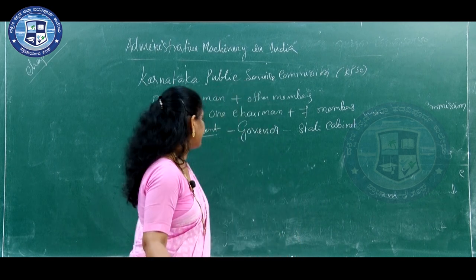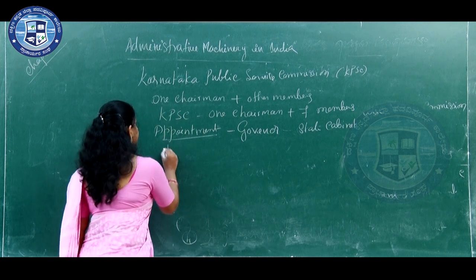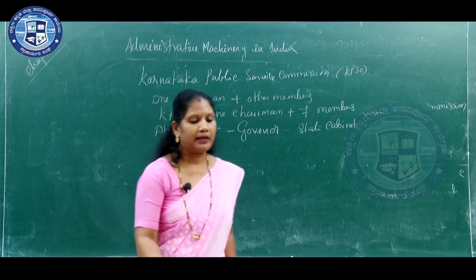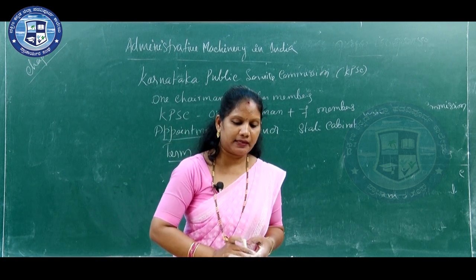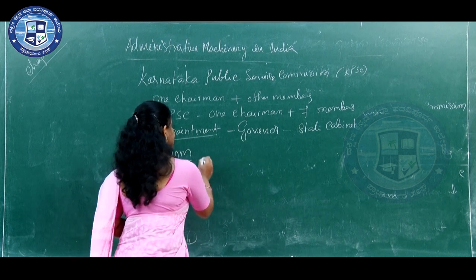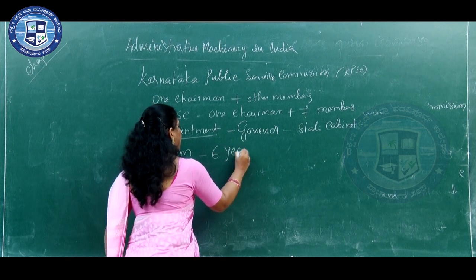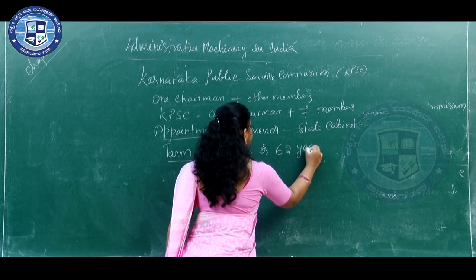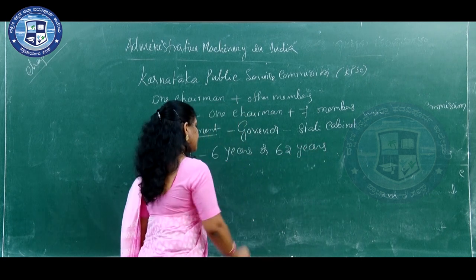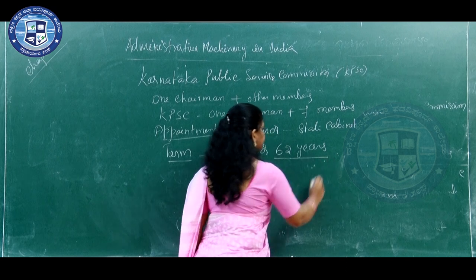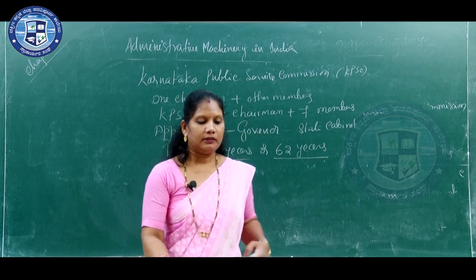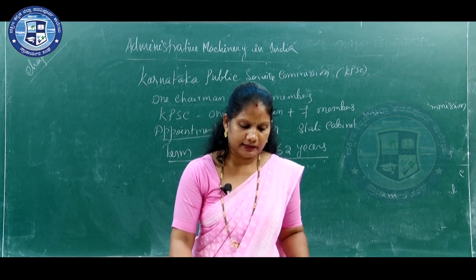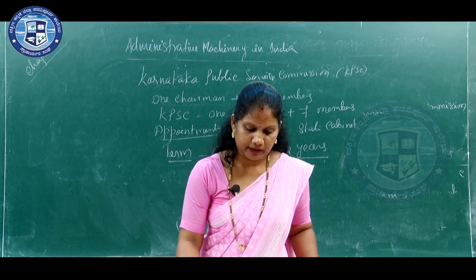The term of the chairman and members of KPSC: they are appointed for a period of 6 years or 62 years, that is the retirement age, whichever comes earlier. They enjoy the term of 6 years or till they attain the age of retirement.